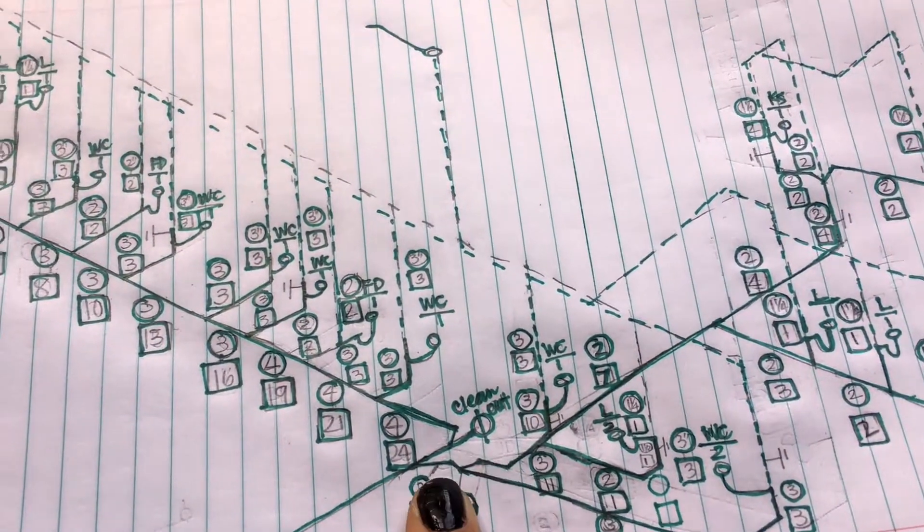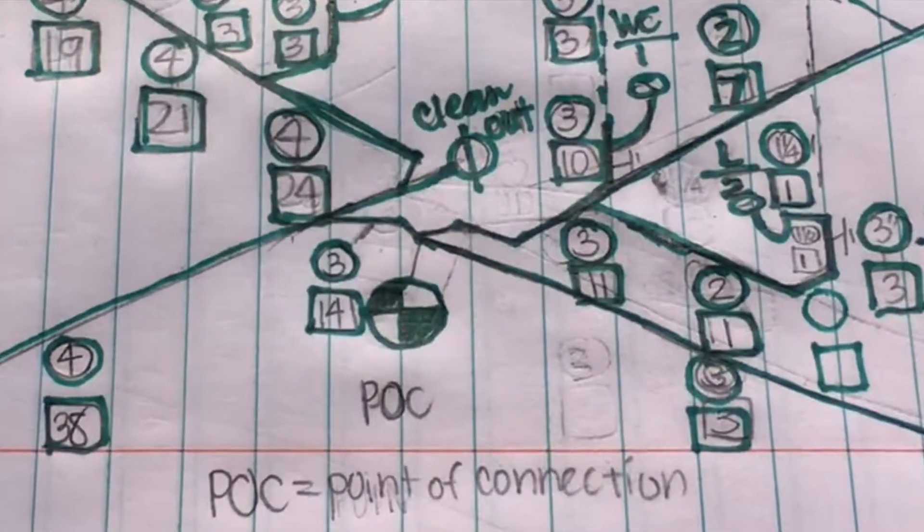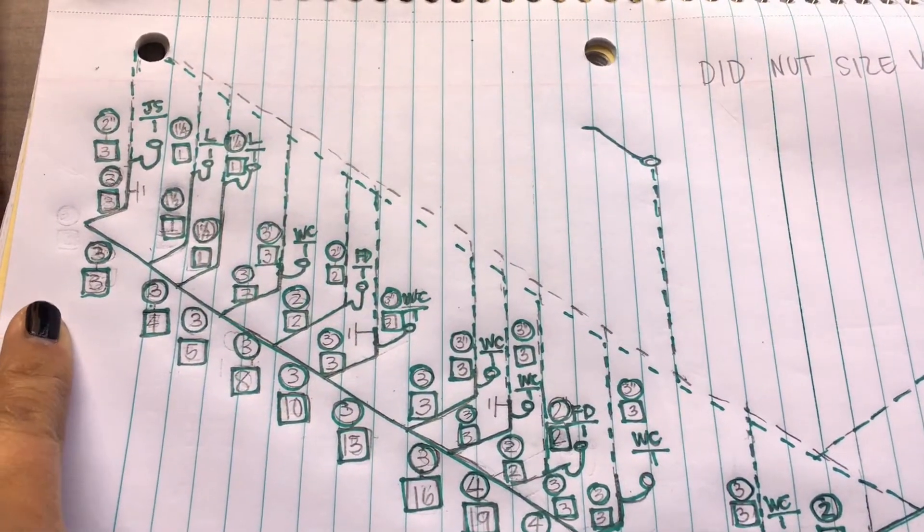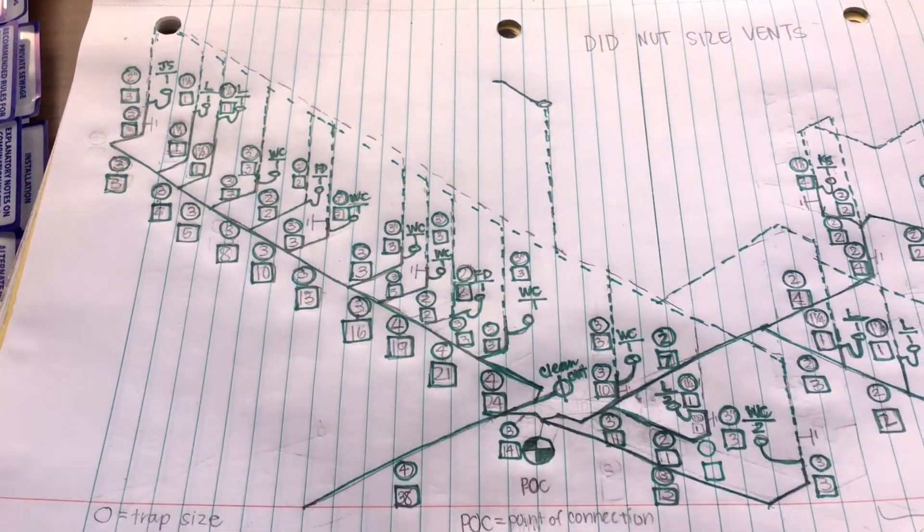The assignment requires not only putting the pipe size in a circle and the DFU in a square, but also drawing where the clean-out will be. One clean-out is already given on the plan — it's a circle with a line in the middle. Every north end of a terminal also needs a clean-out, so I drew those in. If you're watching this as a source of correct information, please do not use this as an instructional tool — I don't know if this is correct, and I plan to show the correct answers in a later video.